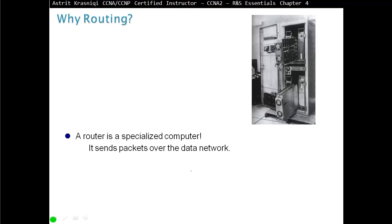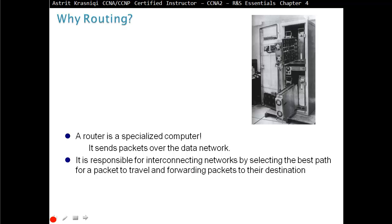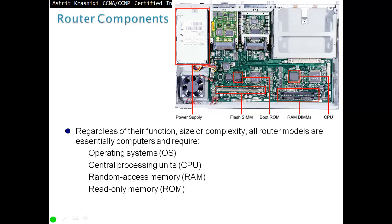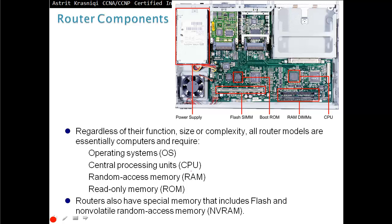A router sends packets over the data network and is responsible for interconnecting networks by selecting the best path for a packet to travel and forwarding packets to their destination. Regardless of their functions, size, or complexity, all router models are essentially computers. Like a normal computer, they require an operating system, CPU (central processing unit), RAM (random access memory), and ROM (read-only memory). Routers also have special memory including flash and non-volatile random access memory, or NVRAM.